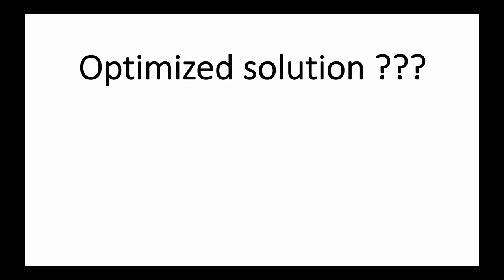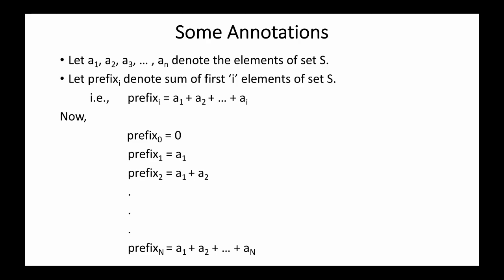Now let's try to get the most optimized solution. Before jumping in, let me familiarize you with some annotations we will be using. Let a1, a2, a3, up to a_n denote the elements of set S. Let prefix_i denote the sum of the first i elements of set S — that is, prefix_i equals a1 plus a2 plus so on until a_i.